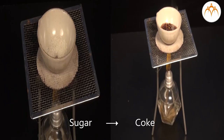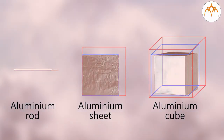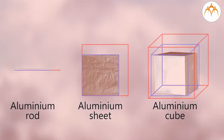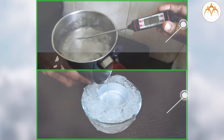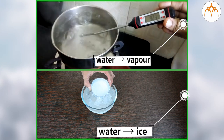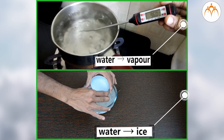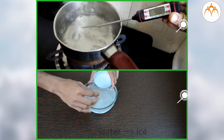We also looked at changes in the properties of substances when heat transfer occurs. Substances respond by change in length and volume when heated or cooled. State change also occurs as a result of heat transfer, like water turning into ice and water turning into water vapour.